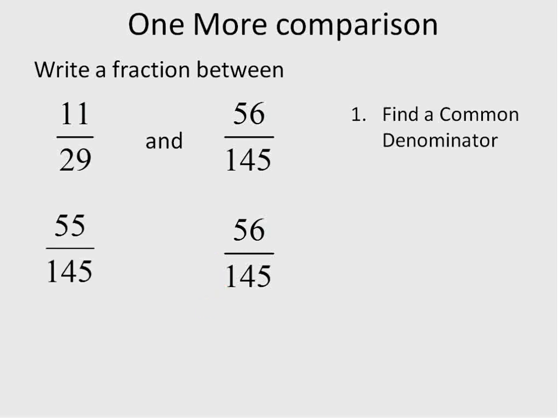And our fraction on the left will get multiplied times 5 on the top and on the bottom. Now, we're asked to write a fraction in between these two and unfortunately we can't. 55 and 56, we can't write anything that's in between that. So what we need to do is go one step further. We're going to find another common denominator but one that's even bigger.